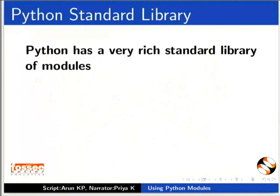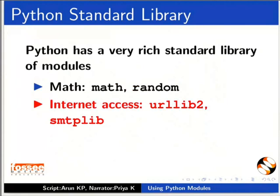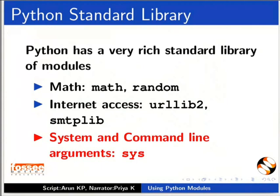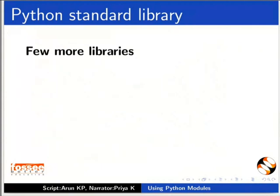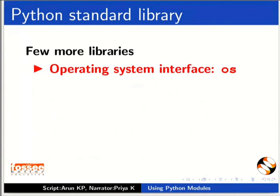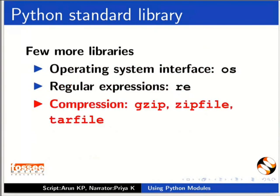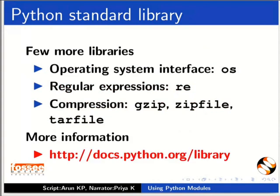Python has a very rich standard library of modules. Some of the standard modules are: for math — math, random; for internet access — urllib2, smtplib; for system and command line arguments — sys; for operating system interface — os; for regular expressions — re; for compression — gzip, zipfile, tarfile. For more information, refer to the link below.